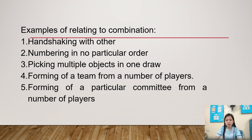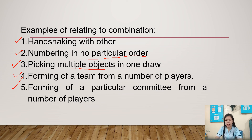Examples relating to combinations: number one is handshaking with others — there is no ordering of elements. Number two is numbering in no particular order. Number three is picking multiple objects in one room — not an ordered element. Number four is forming a team from a number of players. Number five is forming a particular committee from a number of players. These are examples relating to combinations — sets of objects that do not define any ordered elements.